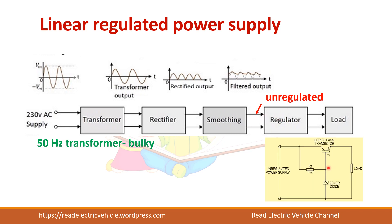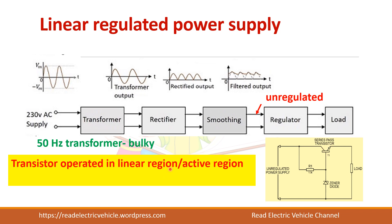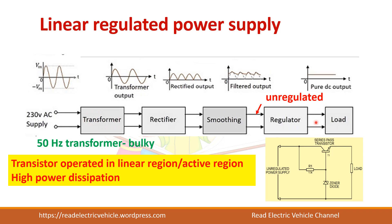So what is this regulator? It basically consists of a series pass transistor which operates in the active region or linear region. We know in a transistor there are three regions: cutoff region, saturation region, and active region. Cutoff and saturation regions account for the on and off periods of the transistor. In the active region there will be more power dissipation, so as this transistor always operates in the active region, power dissipation will be higher, and you have to use a larger heat sink. However, this regulator output will be a regulated output, which can be given to the load.